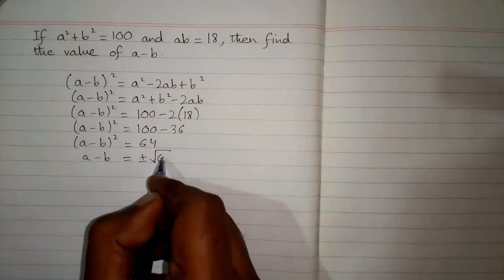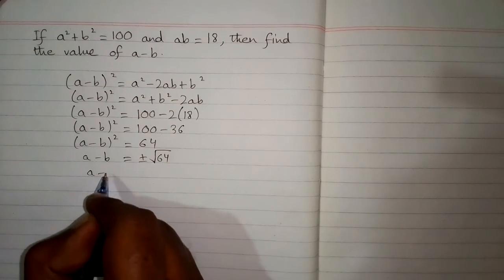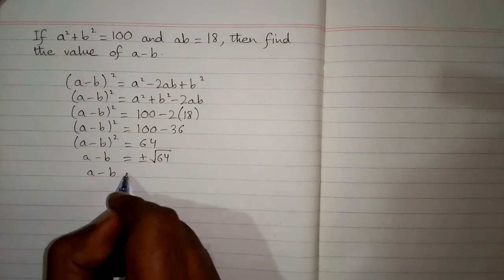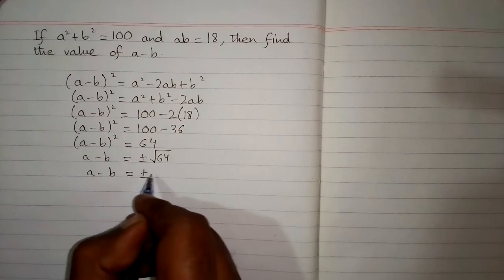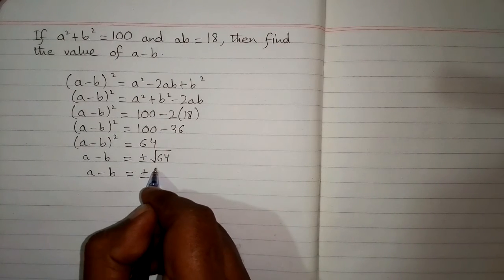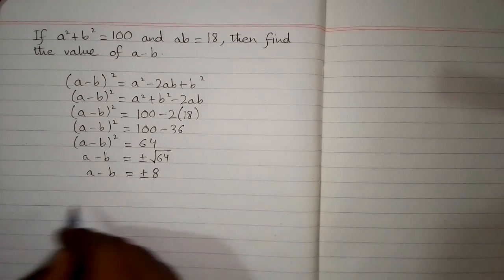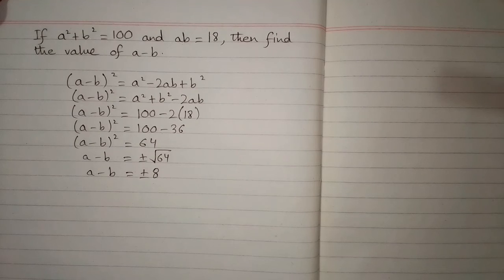The value of a minus b is equal to plus or minus the square root of 64, which is 8. So a minus b is equal to plus or minus 8, and this is the required answer.